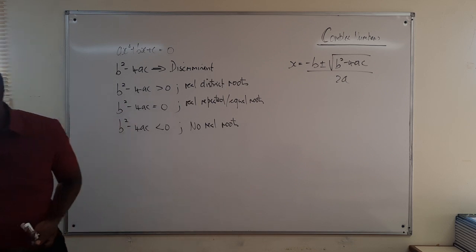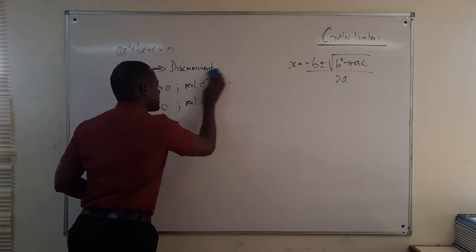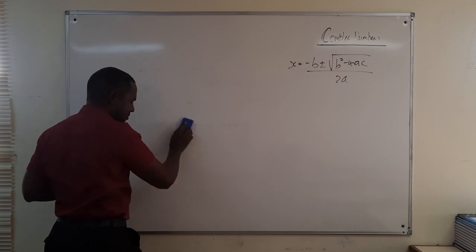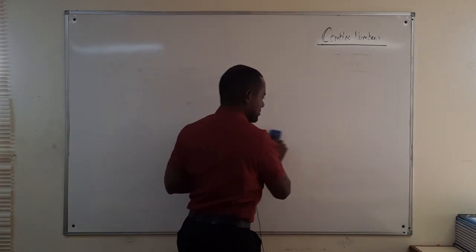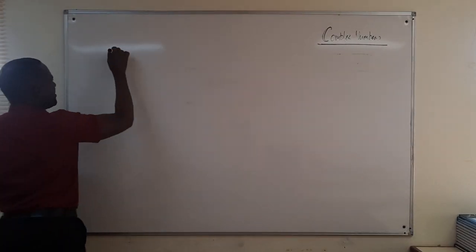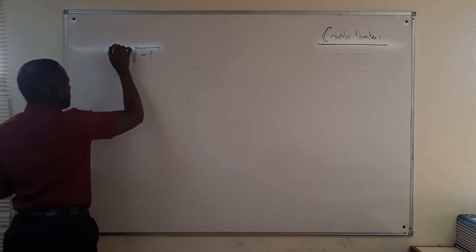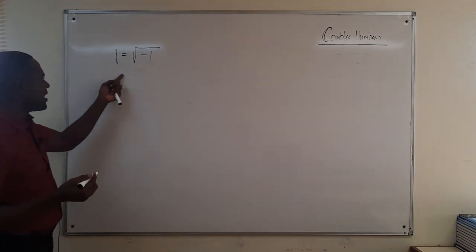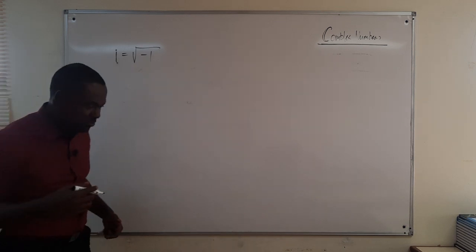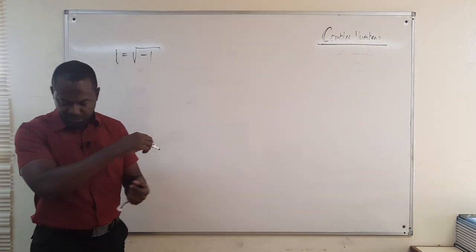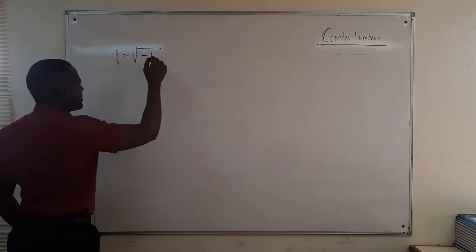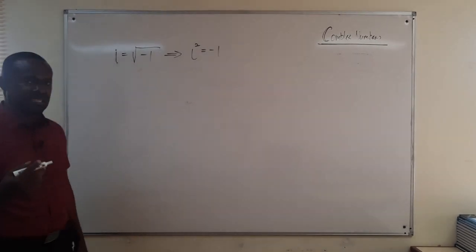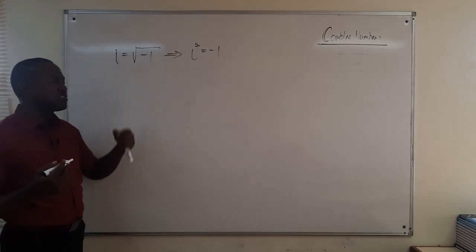The imaginary number i is defined such that i is equal to the square root of minus one. Some books use j, but here we use i for imaginary. This comes from the fact that i squared is equal to minus one — the imaginary number i is chosen such that i squared equals minus one, and therefore i equals the square root of minus one.